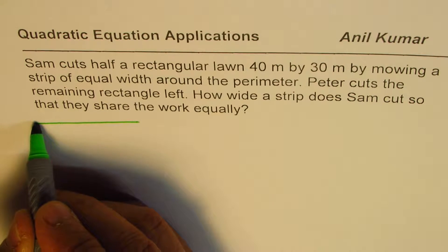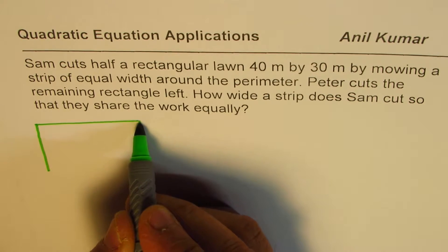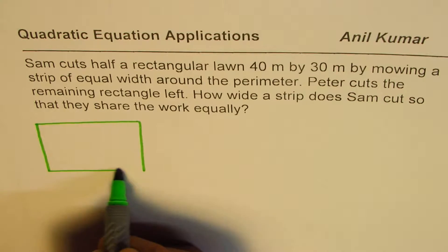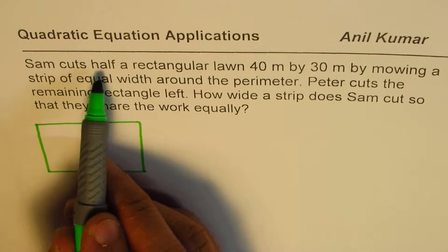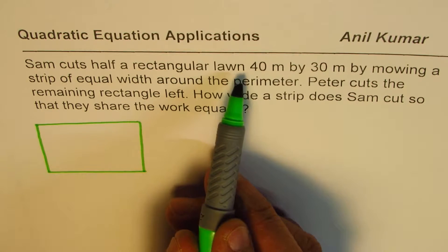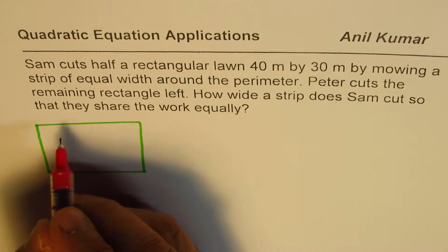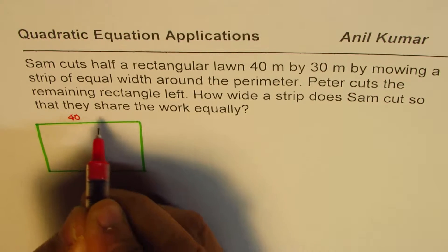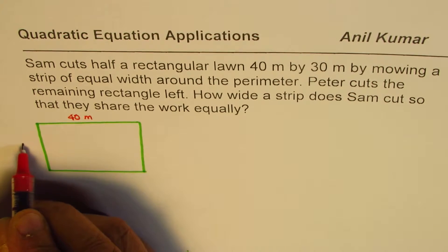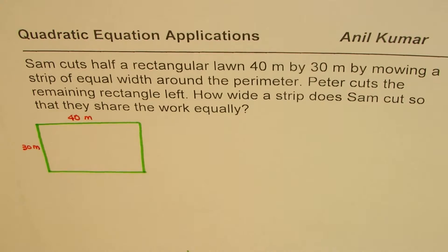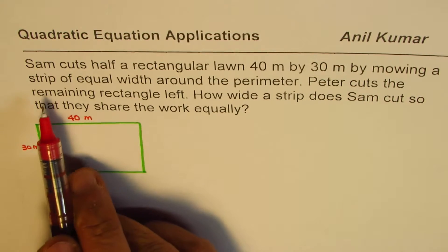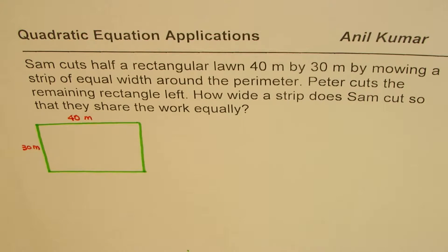So let's say this is our rectangular lawn. It says Sam cuts half the rectangular lawn 40 meters by 30 meters, so we have the dimensions. This is 40 meters and this is 30 meters.